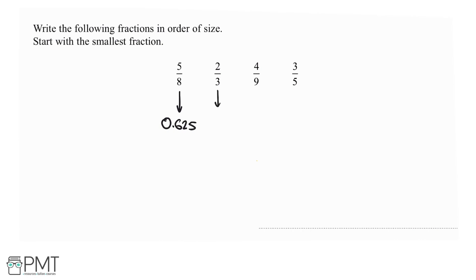Now doing that for this one as well, if we put 2 over 3 in the calculator, click equals, then press the STD button, that gives us 0.6 recurring, and then I've done the exact same thing with the other two fractions here.